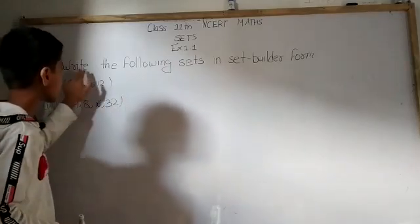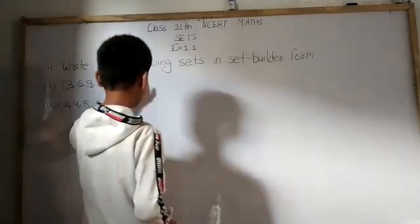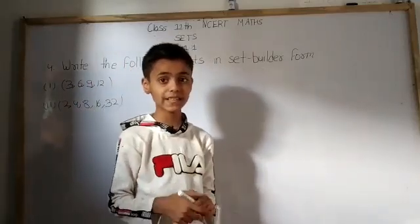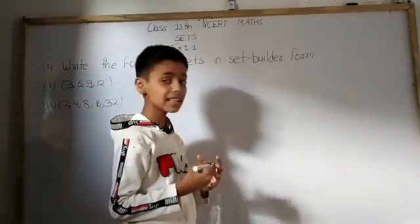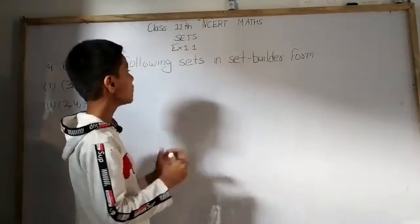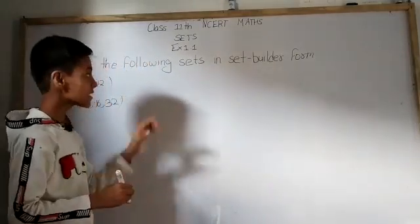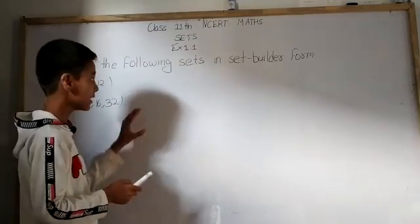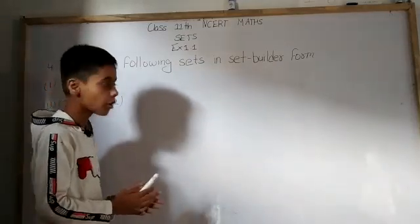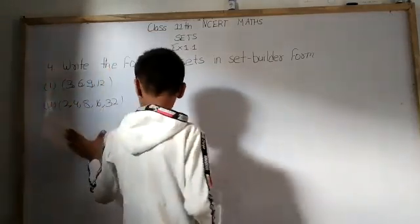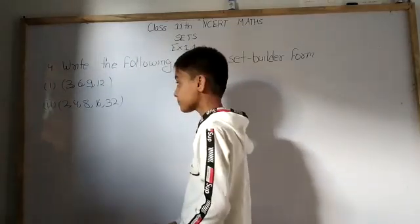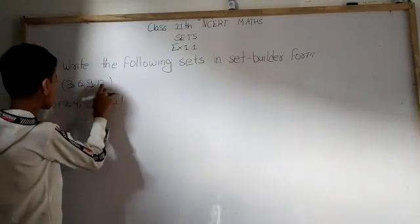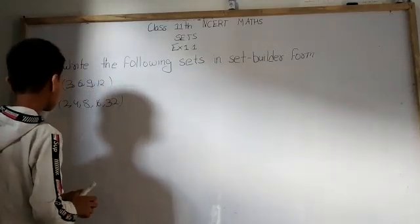Question number four is asking us to write the following sets in set builder form. As we had done in question number three, in that question some sets were given in set builder form and we had to write them in roster form. Here they are given in roster form and we have to write them in set builder form. The first set is {3, 6, 9, 12}.